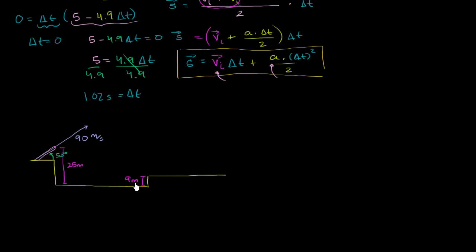So how do we think about this problem? The first thing you'll always want to do is divide your velocity vector into its horizontal and vertical components. You use the vertical component to figure out how long it's going to stay in the air, and then you use the horizontal component to figure out, given how long it's in the air, how far did it travel? And we're going to assume that air resistance is negligible.